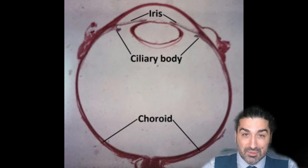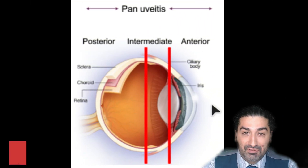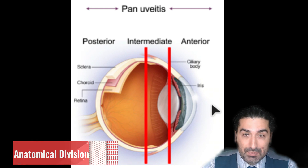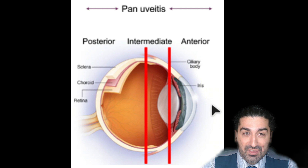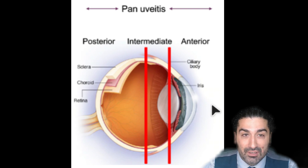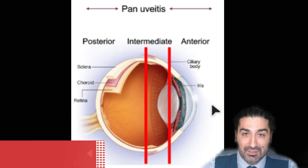We can subdivide uveitis in a lot of ways. Classically the anatomical subdivision is a good starting point, dividing into the front, the middle and the back. The location is important because the symptoms and signs patients get will be reflected by where the inflammation is. The most common front-of-eye presentation will have more pain, redness, light sensitivity; the middle might have more floaters. We call it pan uveitis when it spans the layers, but the key point is to ask where the majority of inflammation is located.